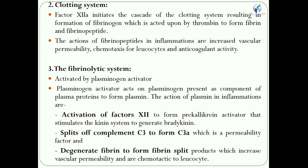Next is the clotting system, which we studied in detail in first and second semester human anatomy and physiology. Factor 12a initiates the cascade of the clotting system. This cascade results in the formation of fibrinogen. Fibrinogen then acts under the influence of thrombin to form fibrin — initially soluble in nature, and subsequently forming an insoluble fibrin layer — as well as fibrinopeptides.